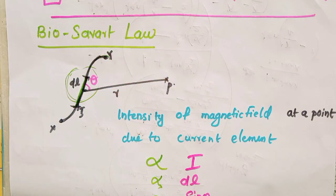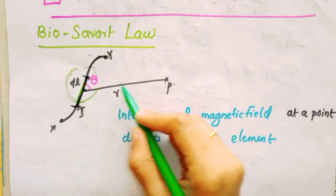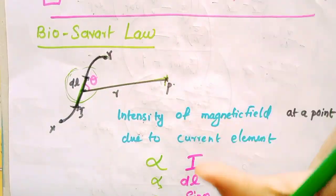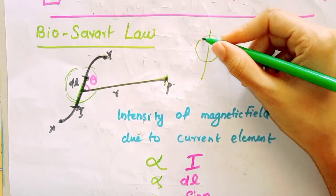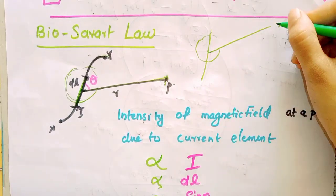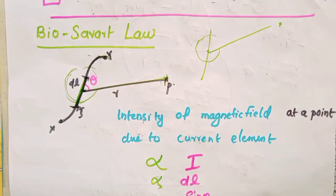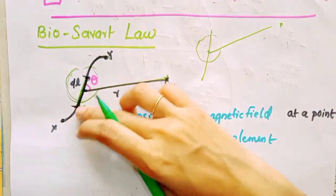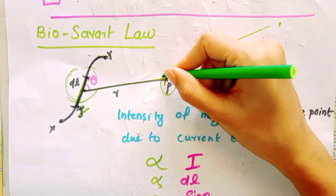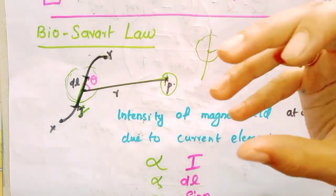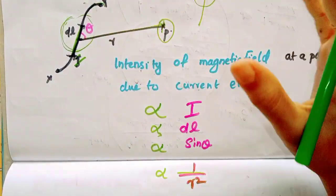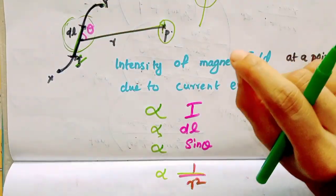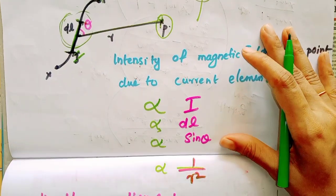The element has a small length. The magnetic field dB is produced at a point. The intensity is a function of the current element, its length dl, and the angle theta between the current element and the line joining the element to the point. Sin theta is the relevant angular factor.